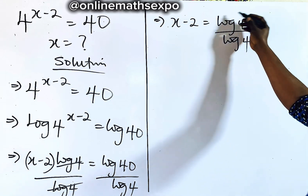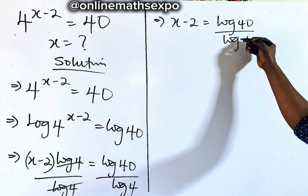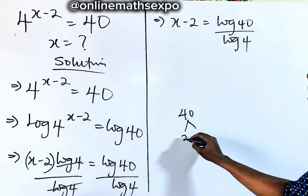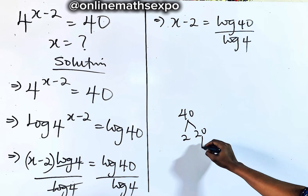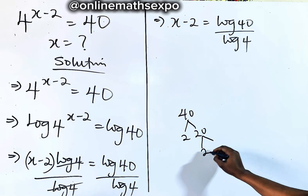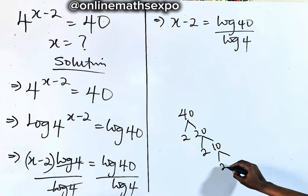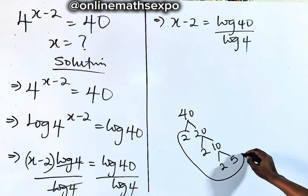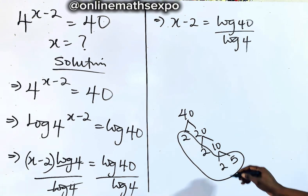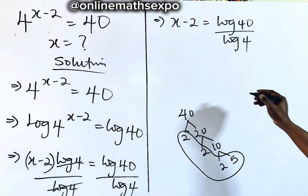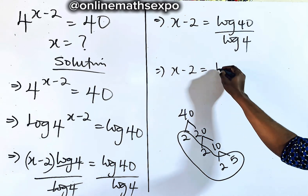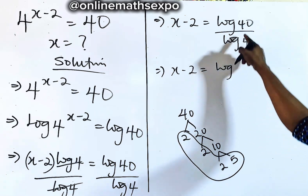Now we're going to simplify this. We know that 40 is 2 times 20, 20 is 2 times 10, and 10 is 2 times 5. So for 40, we're going to have x minus 2 is equal to log of 40, which is 2 cubed times 5, divided by log of 4, which is 2 squared.